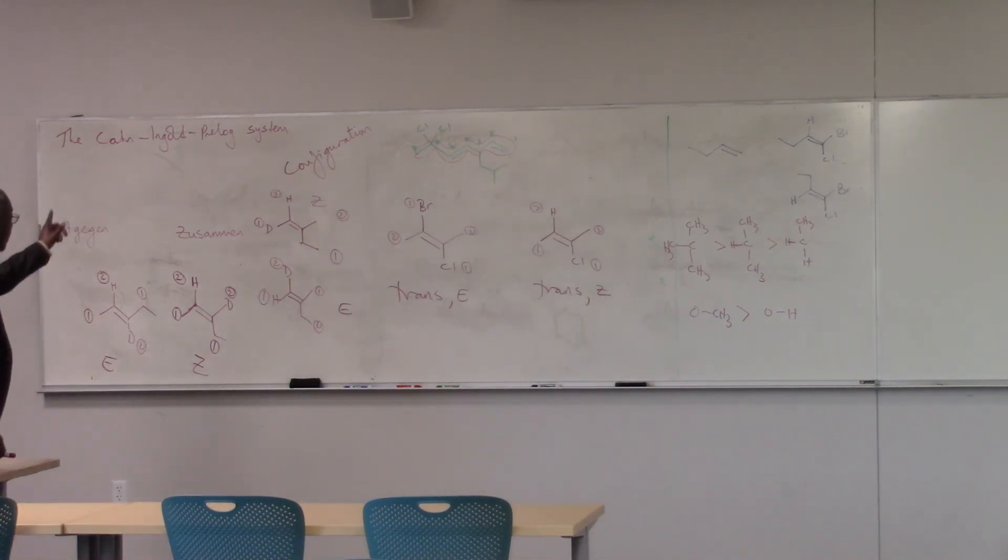And so in those cases, E and Z will always work. So we do E and Z, using the Cahn-Ingold-Prelog system, based upon the atomic numbers of the first attached atom and the second, third, fourth, and so on to the side. And then when the atoms are isotopes, you look at atomic mass.